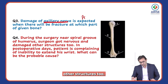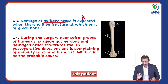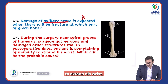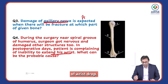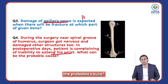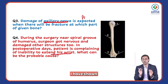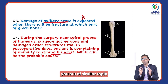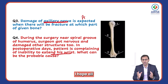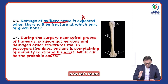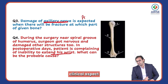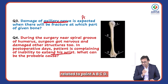Next question: during surgery near the spiral groove of the humerus, the surgeon damaged other structures too. In post-operative days, the patient is complaining of inability to extend his wrist — this is also a case of wrist drop. The probable cause is radial nerve injury. This shows how many questions can be framed from a similar topic.